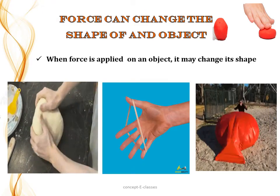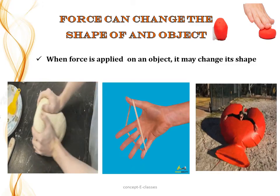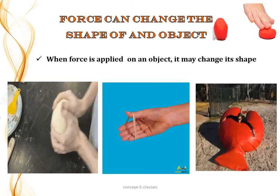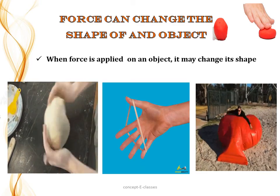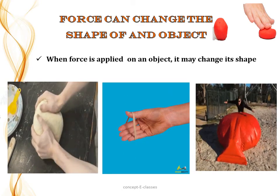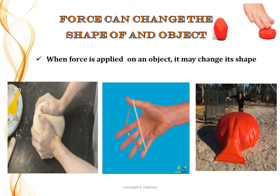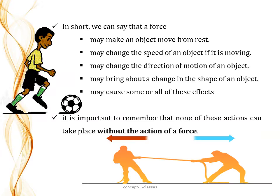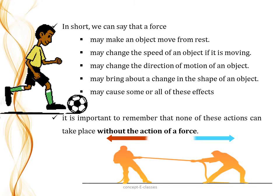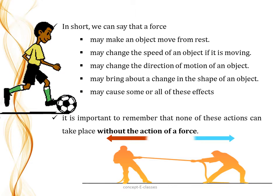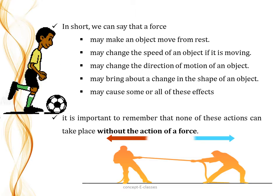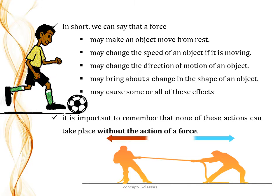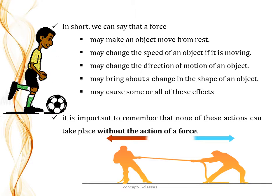The next effect of force is that it can change the shape of an object. When we knead dough, we apply force and there is a change in shape. When we stretch a rubber band, force changes its shape. Similarly, when we apply force on an inflated balloon, it changes shape. In summary: a force may make an object move from rest, change the speed of a moving object, change the direction of motion, or change the shape of an object. None of these actions can take place without force — an object cannot move or change speed by itself.